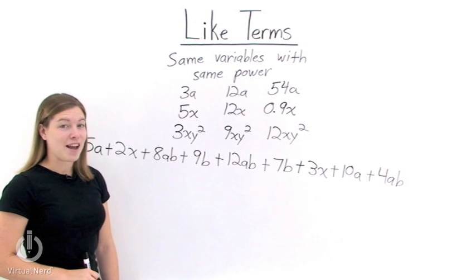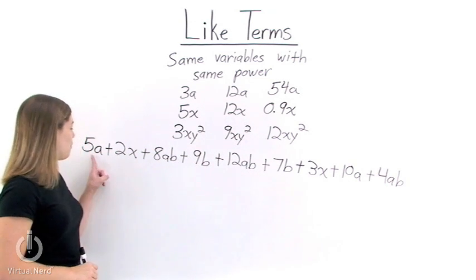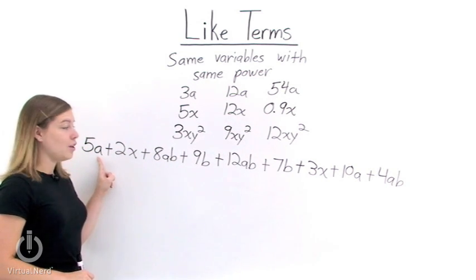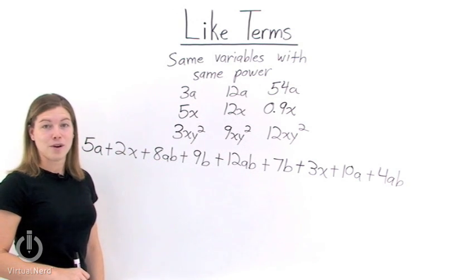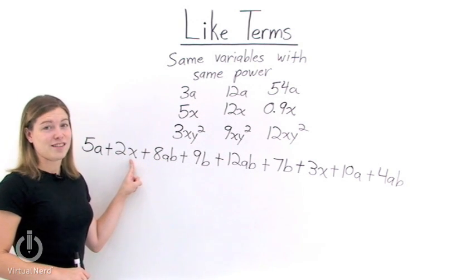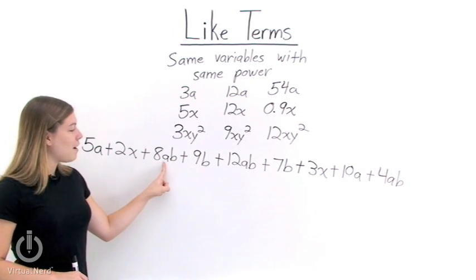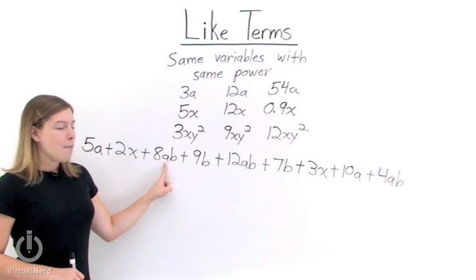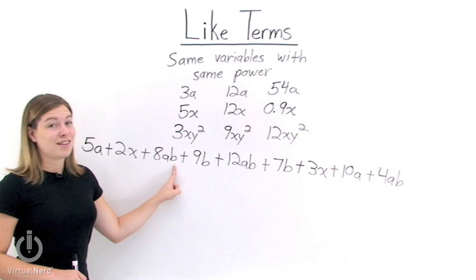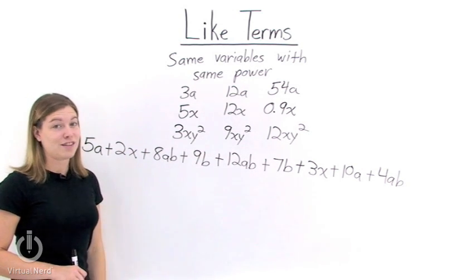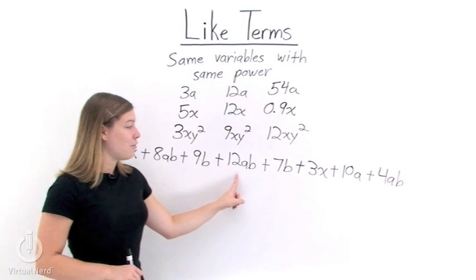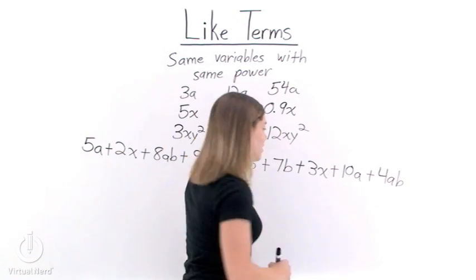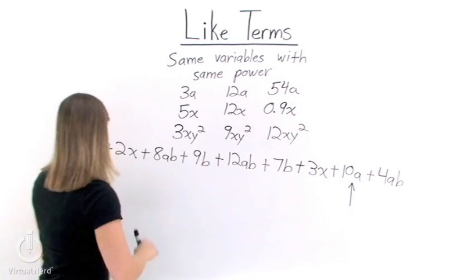Now let's look at each term and see if we can pick out its like terms. Let's start with 5a. 5a has the variable a raised to the first power, so we want to find each term that also has a raised to the first power. 2x is not a like term. 8ab does have an a raised to the first power, but it also has a variable b, so it's not a like term — we need a by itself. If we keep looking, we find 10a, which has a raised to the first power, so 10a and 5a are like terms.